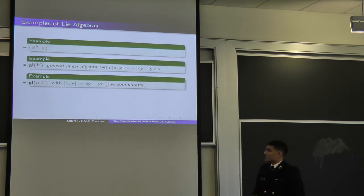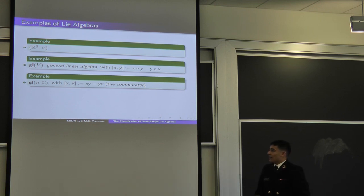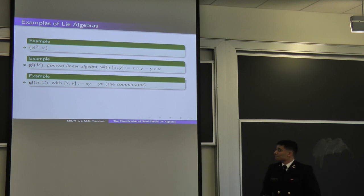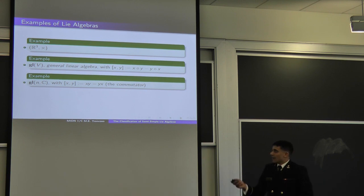If we choose a basis, instead of looking at GL(V) as linear maps we could look at it as matrices, and we call that gl(n, C). We'll be working over the complex numbers for most of this talk because we need the existence of eigenvectors in our classification. We have [X, Y] — instead of composition we have matrix multiplication — and we generally refer to this as the commutator.